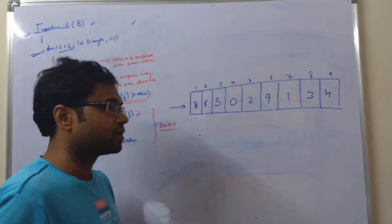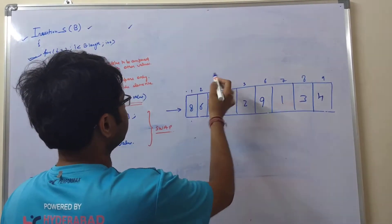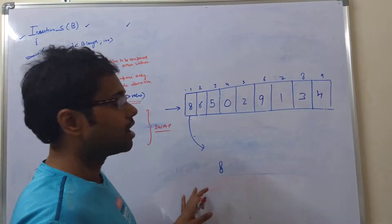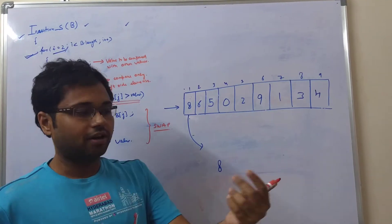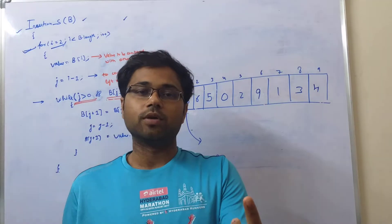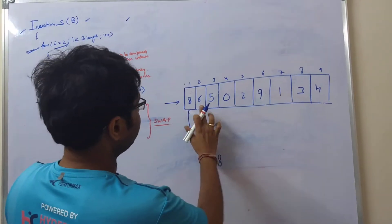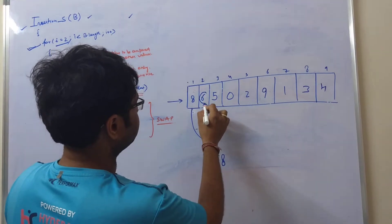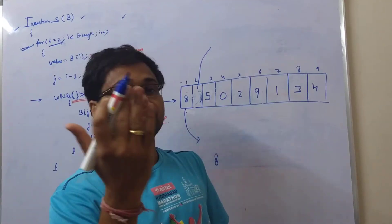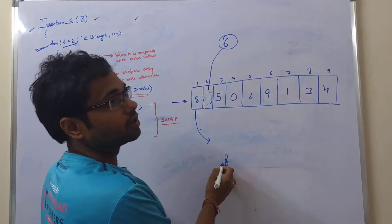Now I will take an example by drawing. I have just taken the first card — number 8 — in my left hand. It is already there, so I do not need to sort it because there is no other card. Now I will take the next card, which is 6, and put it in my right hand. Then I will compare it with the 8.